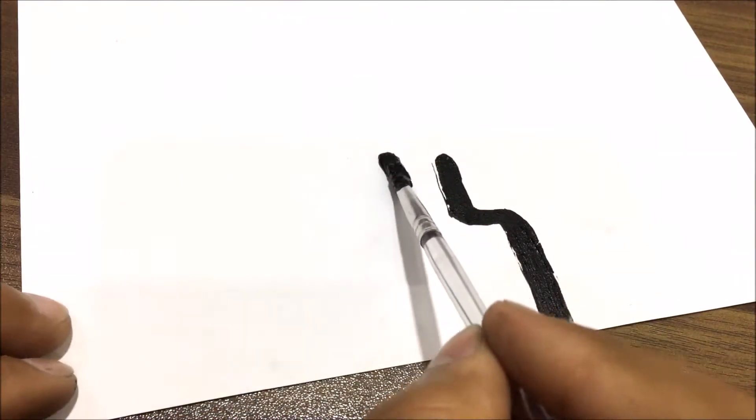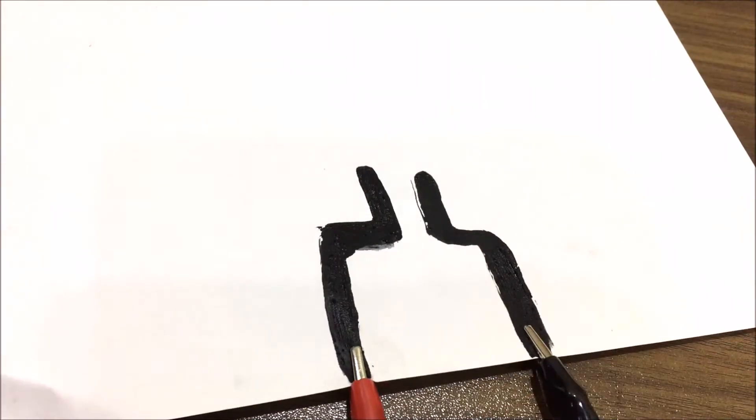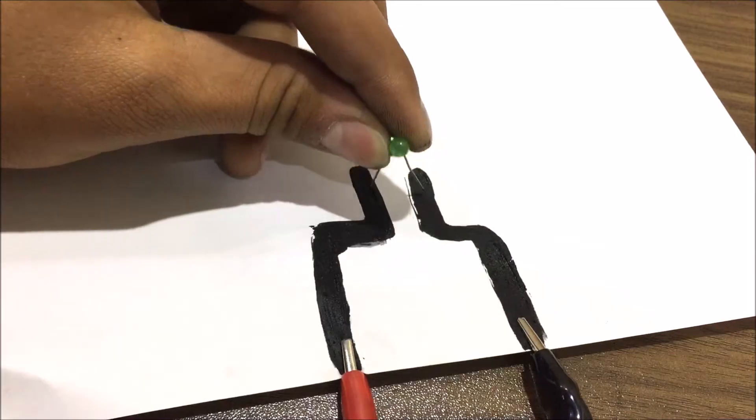I draw these two lines and then connect a voltage supply to light up a small LED. As you can see, the paint conducts electricity.